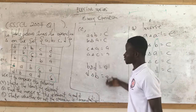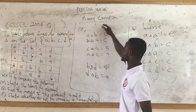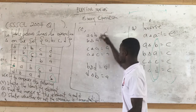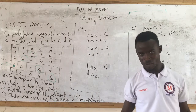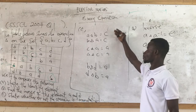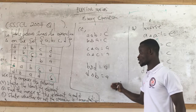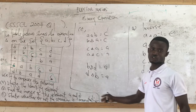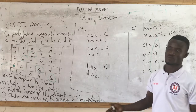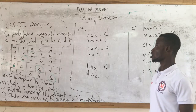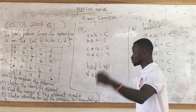So you can write: the operation delta is commutative. You can also state your examples first and then write, due to this reason, the operation delta is commutative. That is all for that.